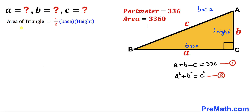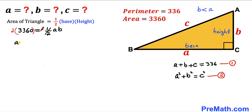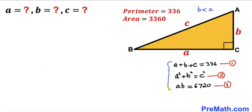Filling in the formula: 3360 equals one-half times a times b. Multiplying both sides by two to remove the fraction gives us a times b equals 6720. Let me call this equation number three. We now have a system of three equations and will solve for a, b, and c.